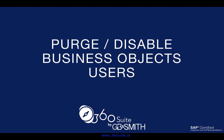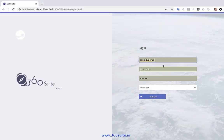Hi, this is Pauline from 360. I'm going to show you how you can purge or disable business objects users. You may have a need to do this if you have a requirement that users have to change their passwords every 90 days. Obviously, if they haven't logged in in 90 days, then they haven't changed their password, so you might want to disable those users.